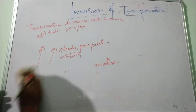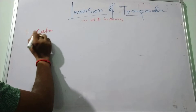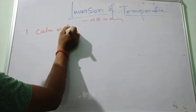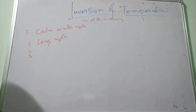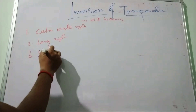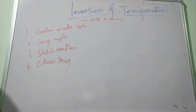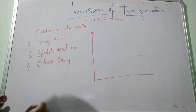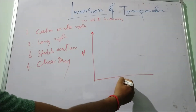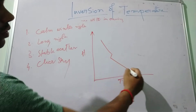So what are the ideal conditions for the development of temperature inversion? First, calm winter nights, long nights, stable weather, and clear skies. These are some favorable conditions that help the process of temperature inversion to occur.